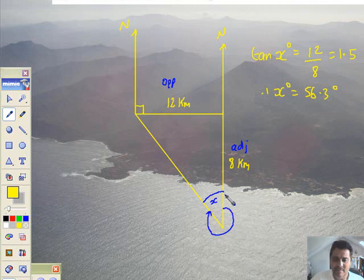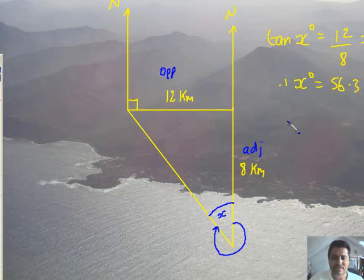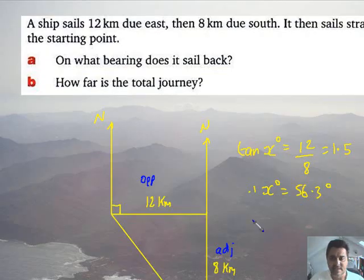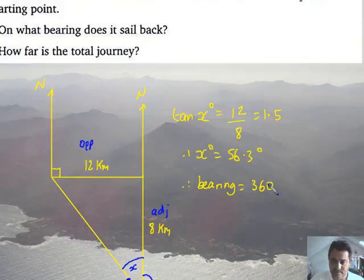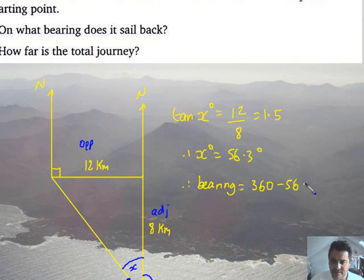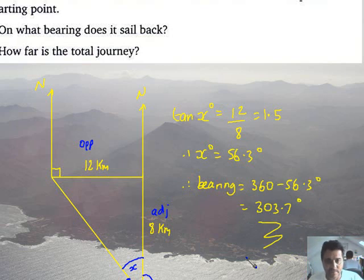So I've got 56.3 degrees is my angle x. But look, x isn't the bearing. The bearing is going to be all the way around here going clockwise. Therefore it's going to be 360 take away my 56.3. Therefore bearing is going to be 360 degrees take away the 56.3 degrees, and that will give me an answer in a minute. 303.7. So 303.7 degrees is my answer. Well that's the bearing to sail back home then.